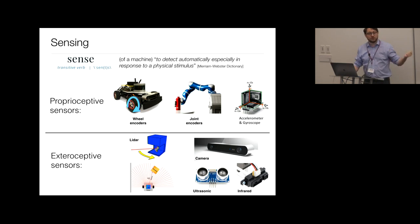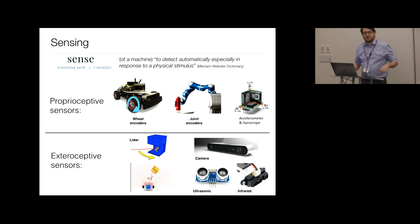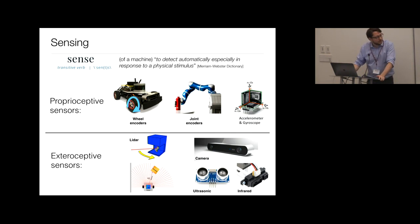Another popular proprioceptive sensor is the inertial measurement unit, which measures acceleration and rotation rates of the robot. On the other hand, exteroceptive sensors measure external quantities about the environment. The most popular exteroceptive sensor in the 2000s was the 2D lidar, which measures distances to obstacles on a horizontal plane, though a 3D version also exists.